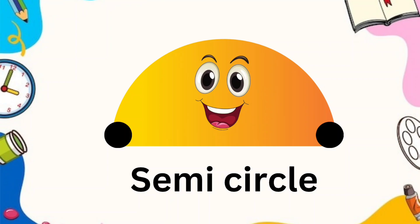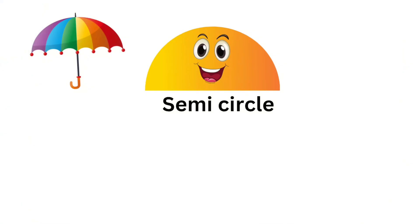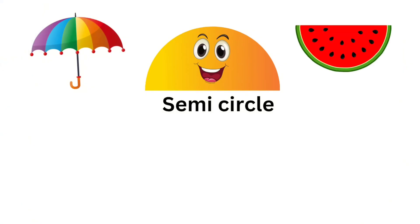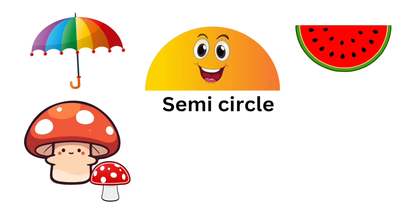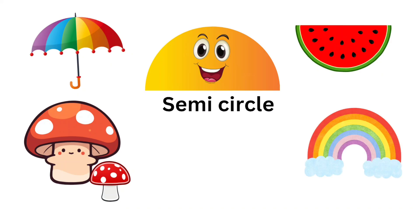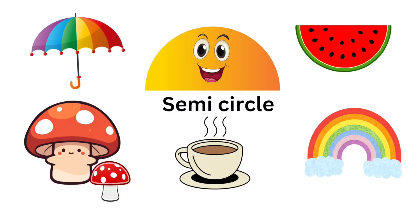You can find me in many objects around your surroundings. You can use me as an umbrella. You can eat me as a watermelon slice. You can see me as a mushroom. You can see me as a rainbow. You can use me as a cup. All these objects can be found in the shape of a semicircle.